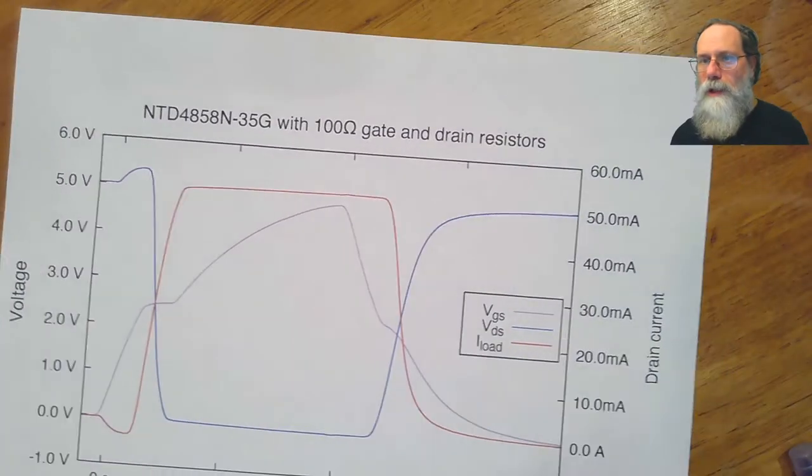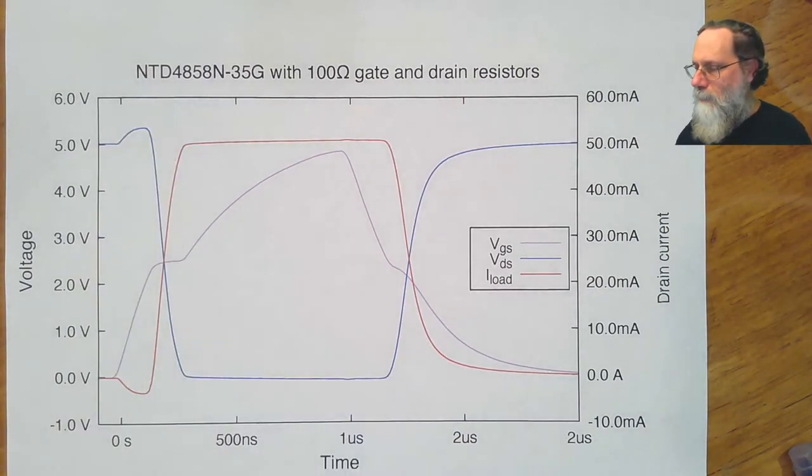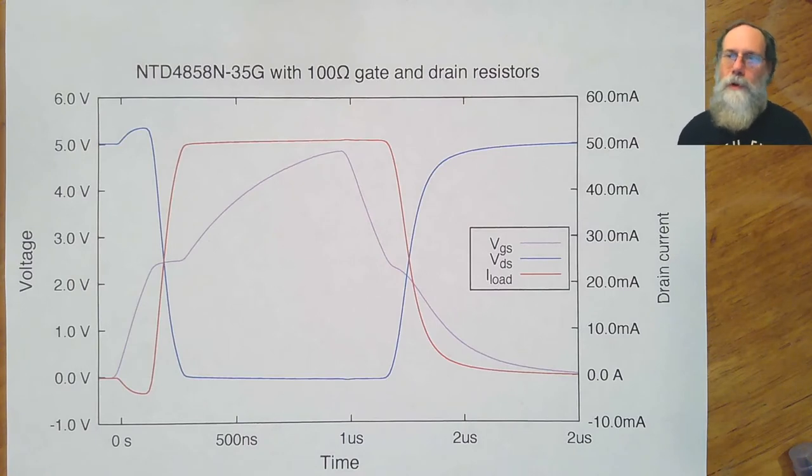Okay, so let's take a look at what that gives us. We've got 100 ohm gate and drain resistors. That's the particular NFET I was using. Different NFETs will of course have different size gates, different speeds, but the phenomenon is going to be about the same no matter what.